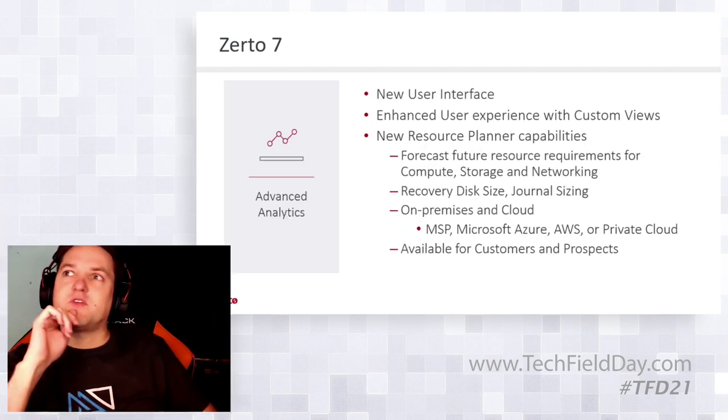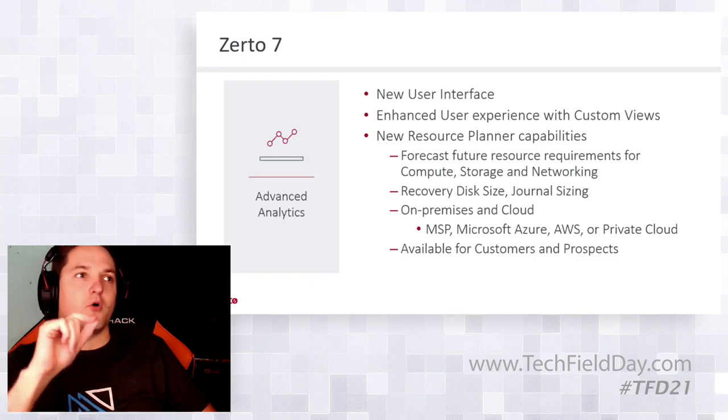On the question of whether MSPs favor one cloud over another: from what I've seen, larger ones tend to have skill sets in multiple clouds. One service provider may be heavily aligned with AWS, another more aligned with Azure. What I'm seeing is a shift where MSPs say you can use our facilities, or if you want to go to public cloud we can manage it there as though it were one of our data centers — managing your VPC or VNets. It's more dependent on which cloud the MSP has deeper skills and alignment in.